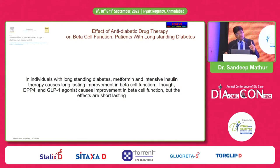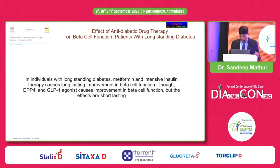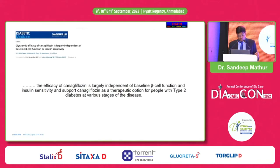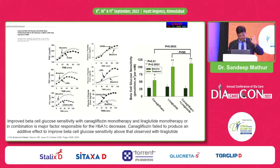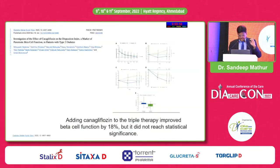Comparing pyoglitazone with SGLT2 inhibitors — one causes weight gain and the other weight loss — your beta cell preservation is better with pyoglitazone. Canagliflozin as a therapeutic option has some impact on beta cell function and can be given irrespective of beta cell function. Improvement in beta cell function was seen with canagliflozin, and adding canagliflozin to triple therapy improved beta cell function by 18%, but the effect was not statistically significant. So canagliflozin does not substantially enhance beta cell function.